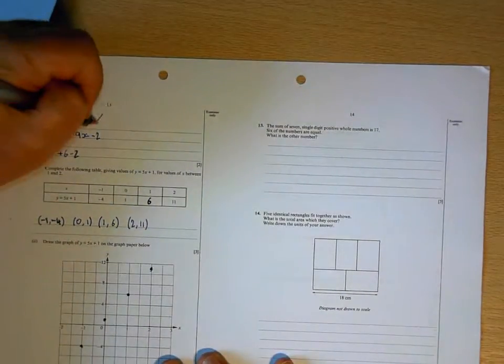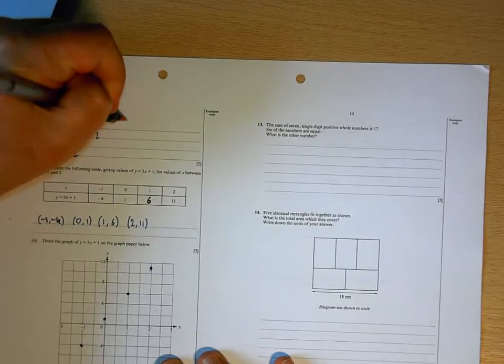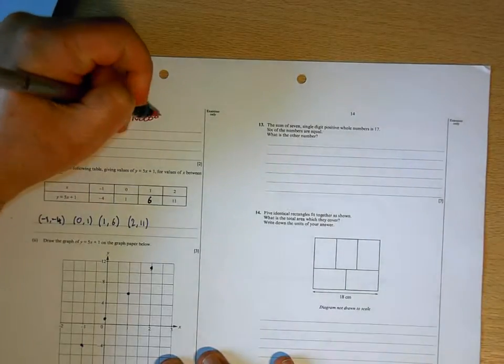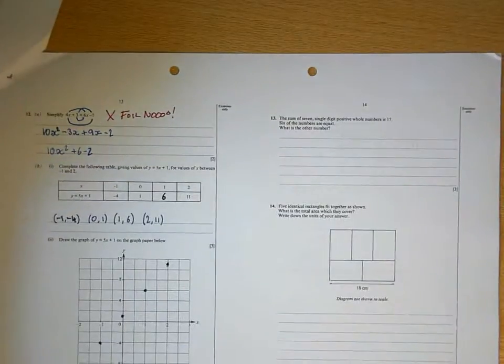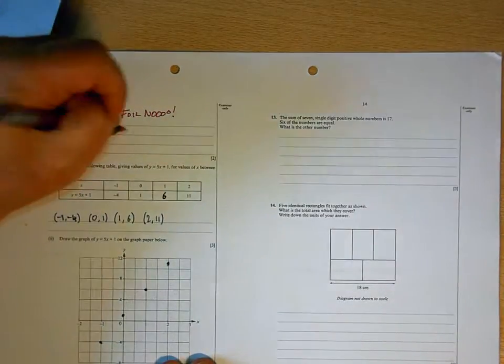This isn't FOIL. You won't be asked FOIL on a foundation tier paper. This is just simplifying algebra.